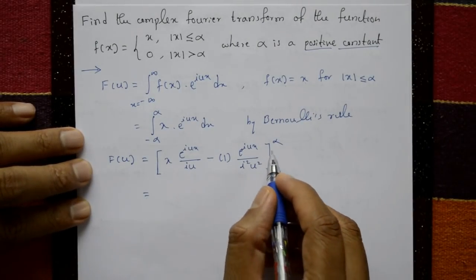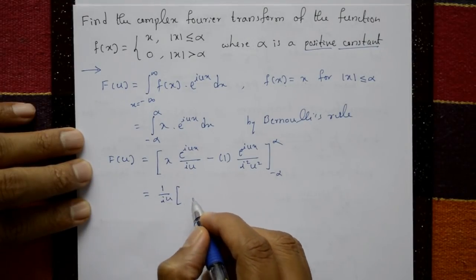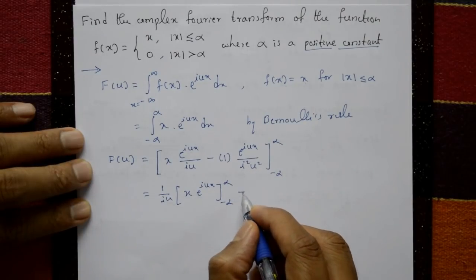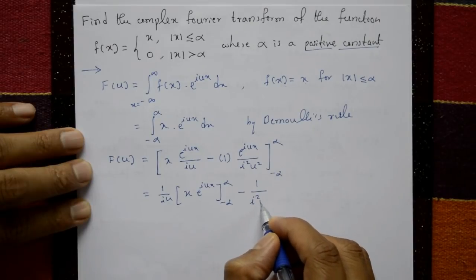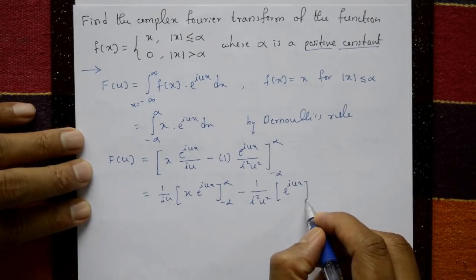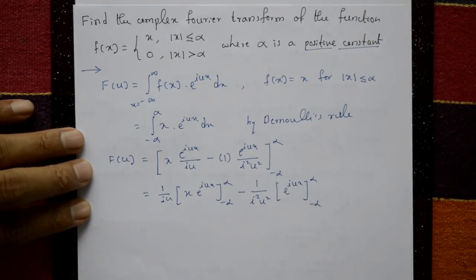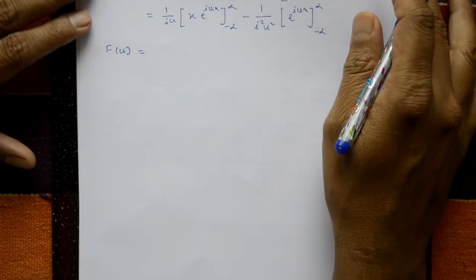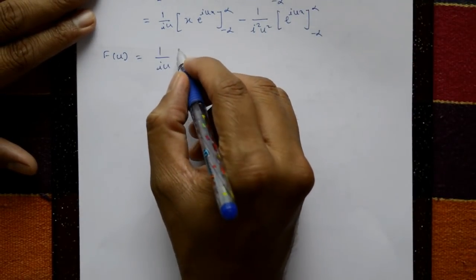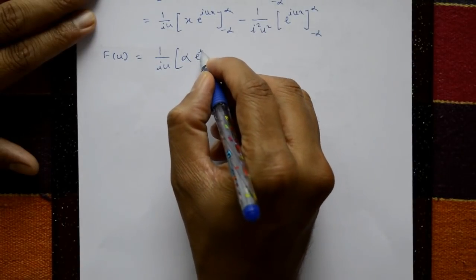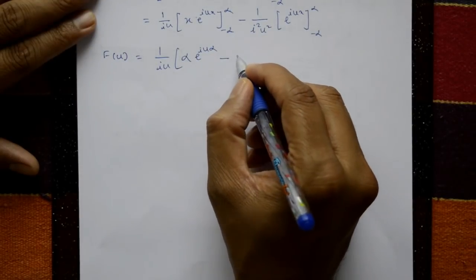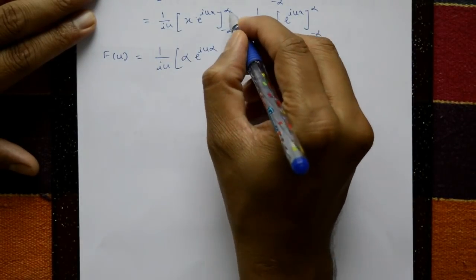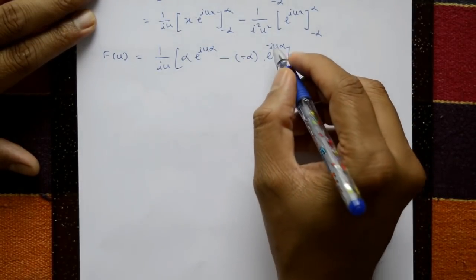Applying the limits: the first term gives 1/(i·u) times [α·e^(i·u·α) − (−α)·e^(−i·u·α)]. The second term gives 1/(i²·u²) times [e^(i·u·α) − e^(−i·u·α)]. Since i² = −1, the minus sign in the second term becomes plus.